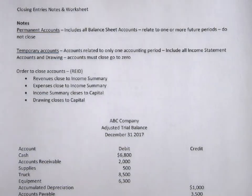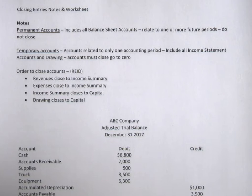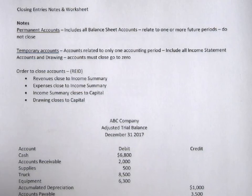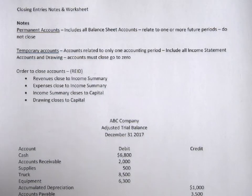We are going to look at the closing entry notes and worksheet today. There are permanent accounts and temporary accounts. Permanent accounts include all balance sheet accounts — they relate to one or more future periods and we do not close these accounts. Temporary accounts are related to only one accounting period; they include all income statement accounts as well as drawing accounts. All of these accounts must go to zero at the end of the period, which means they must close.